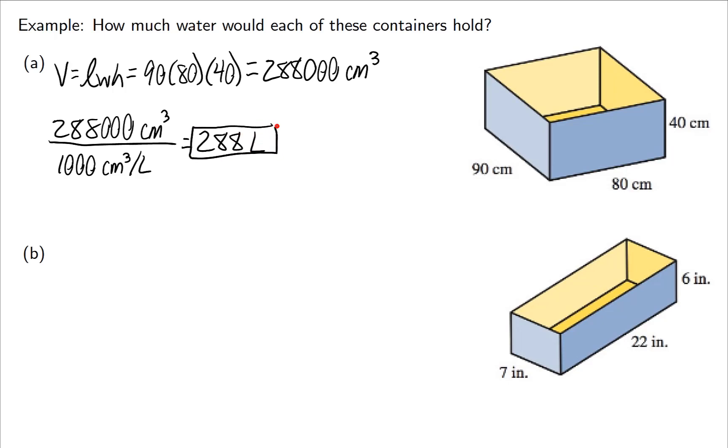If you think about how big this is, it's actually a pretty large object. Next example. Again, the volume would be length times width times height. We'll say the length is 22, the width is 7, and the height is 6, to get 924 inches cubed.